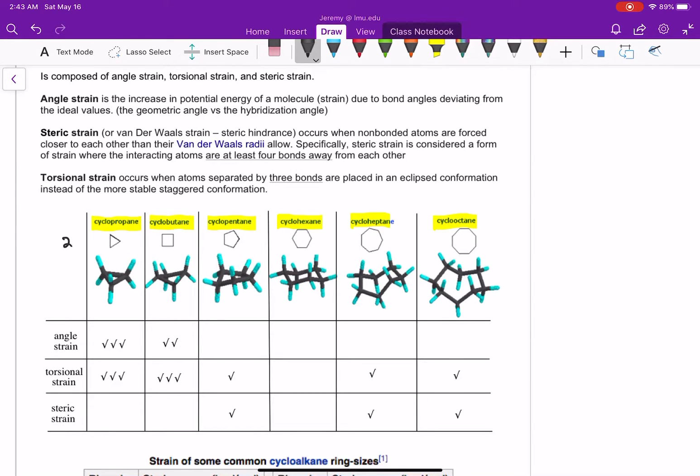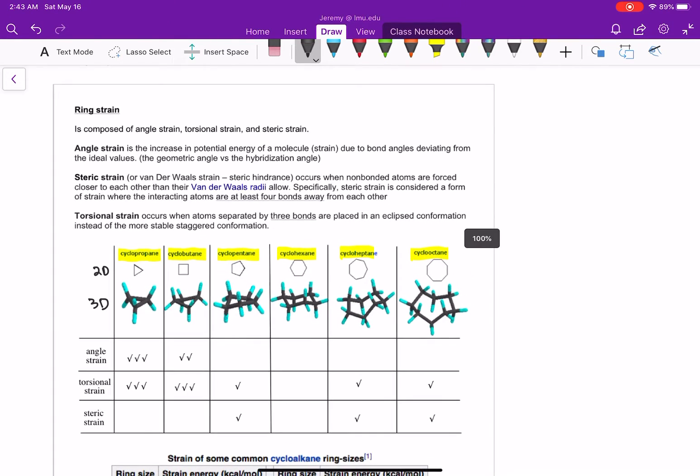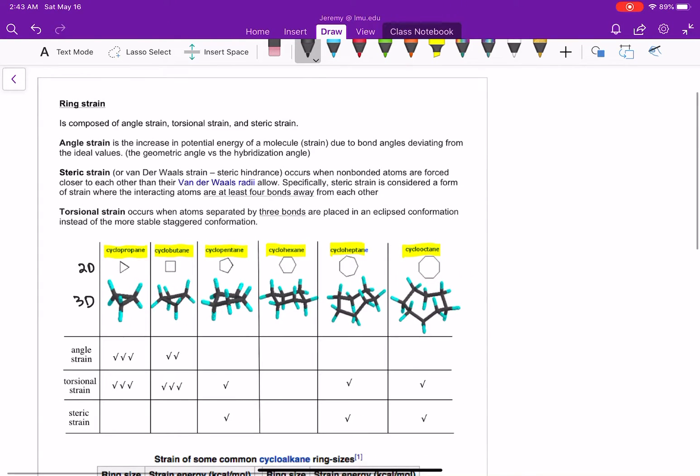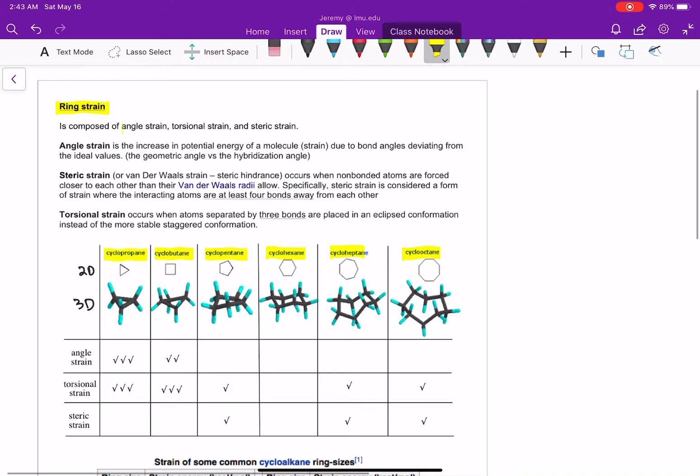So here is our 2D version of what that looks like, and then right below that we have a 3D drawing that we can visualize. It turns out when we draw cyclo-compounds that there is some strain associated with those, and ring strain is the general or summative form of three different types of strains. Ring strain is really composed of angle strain, torsional strain, and steric strain.